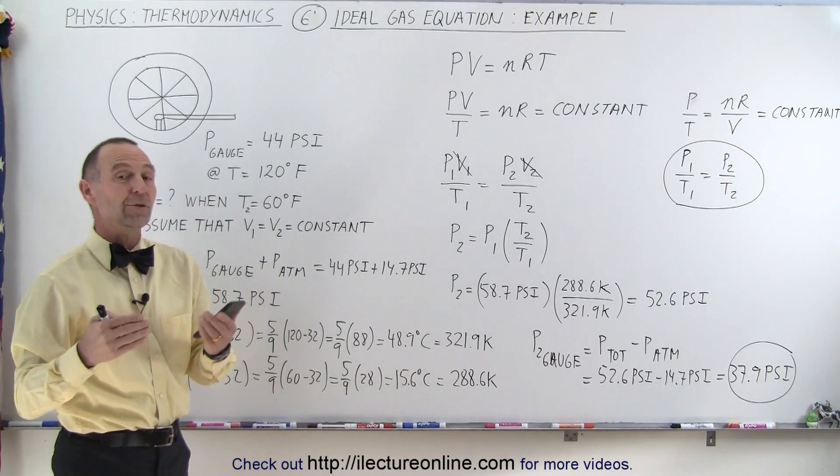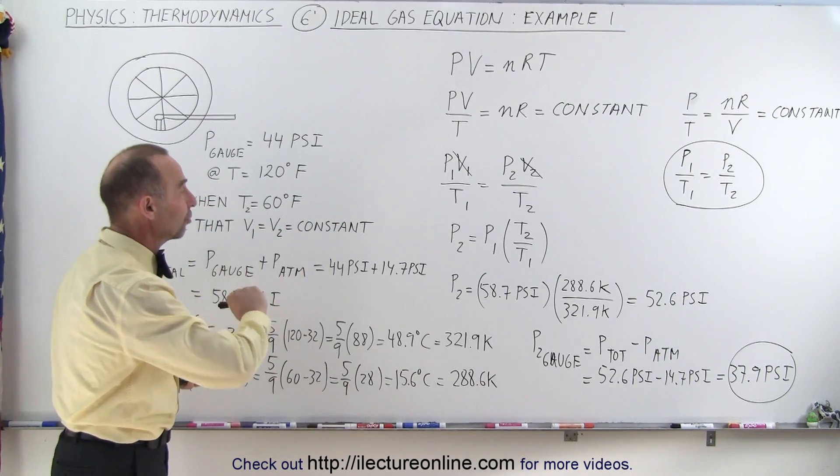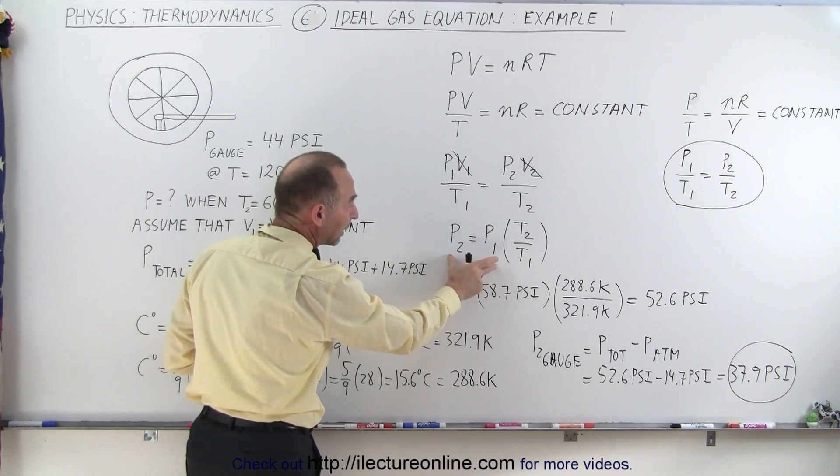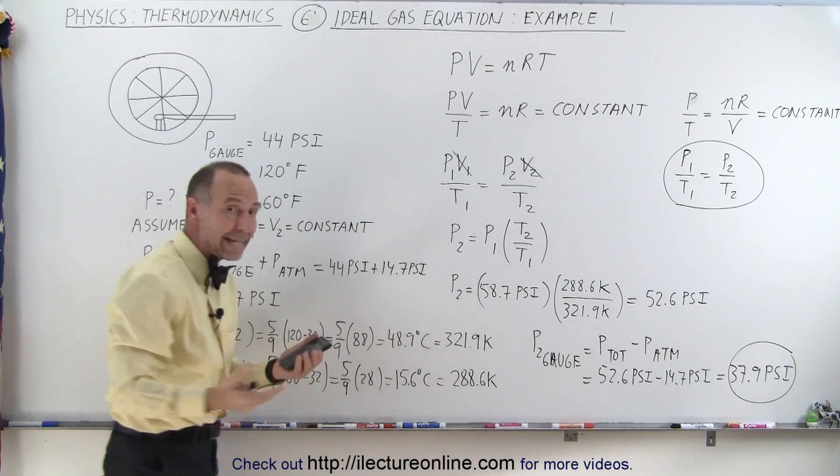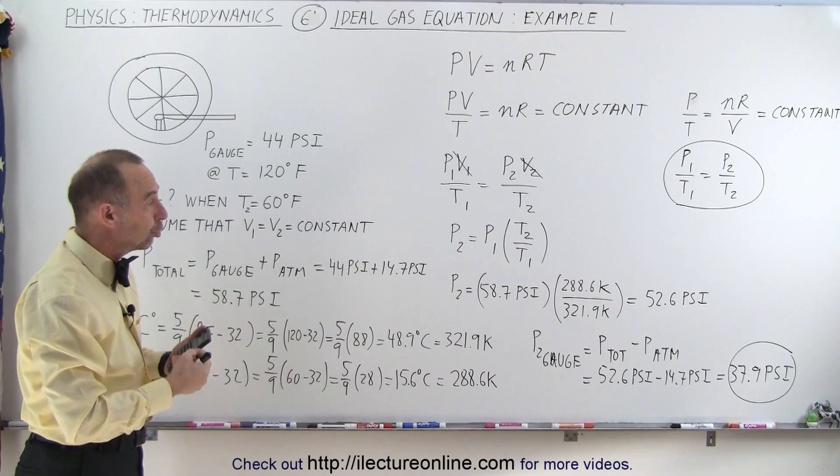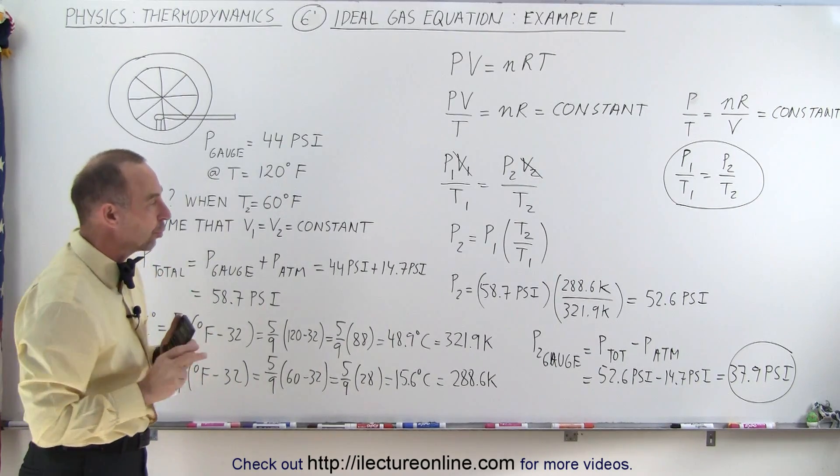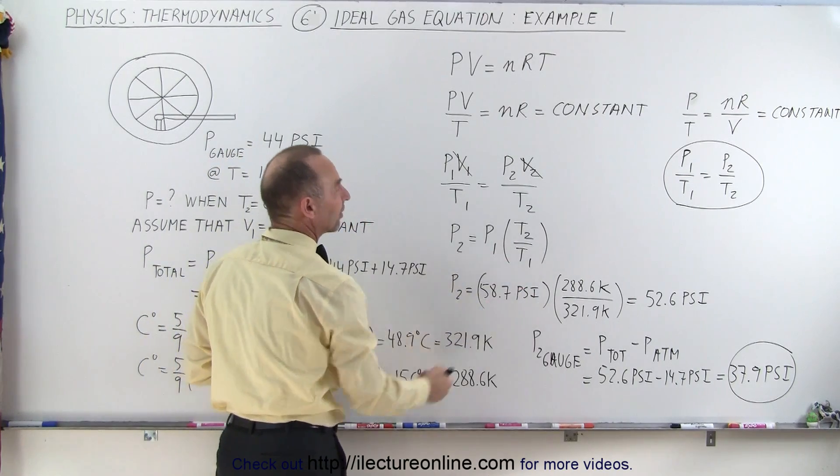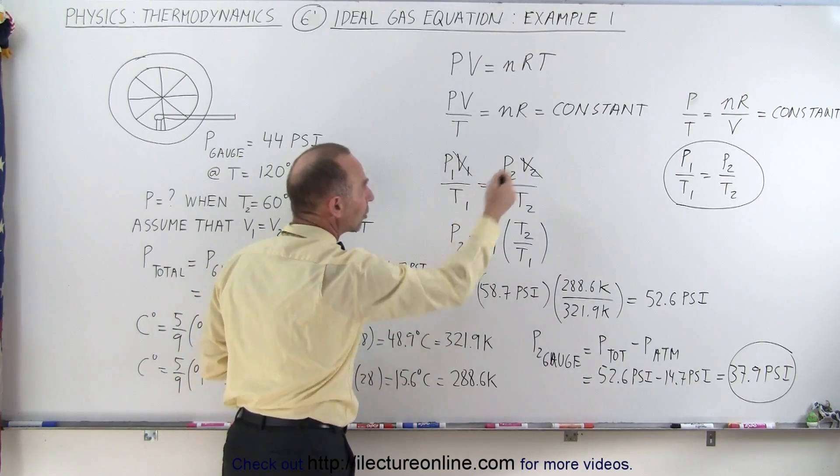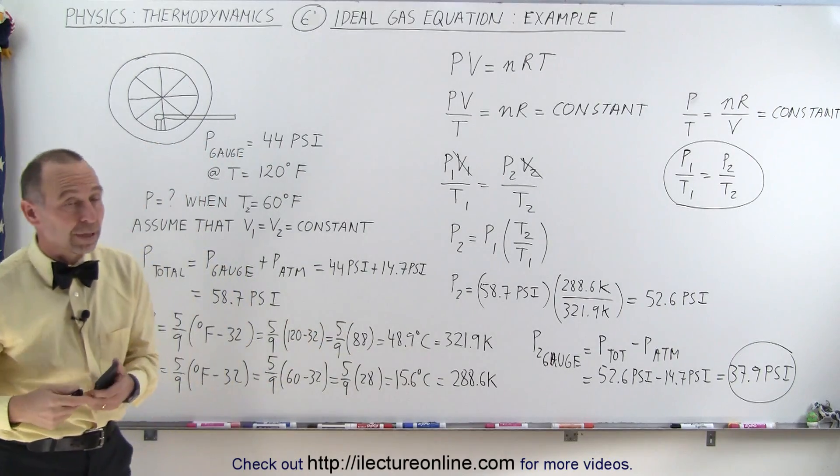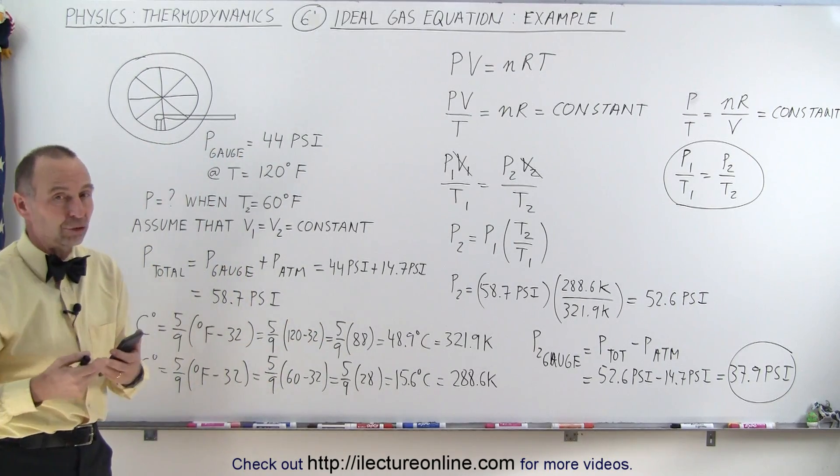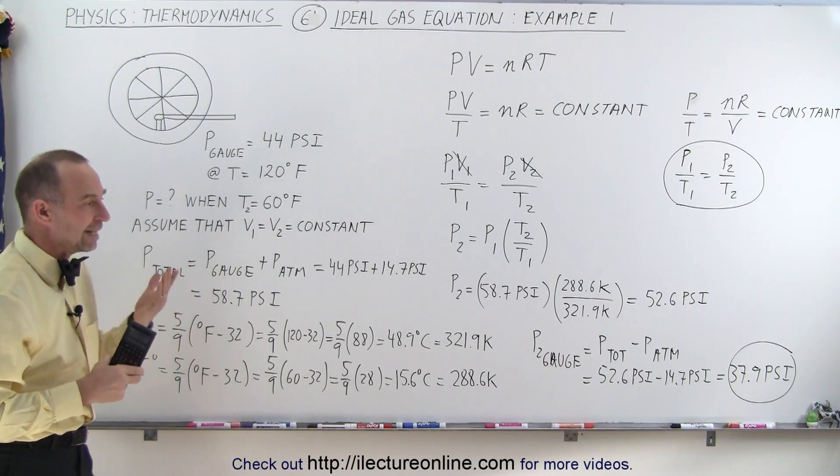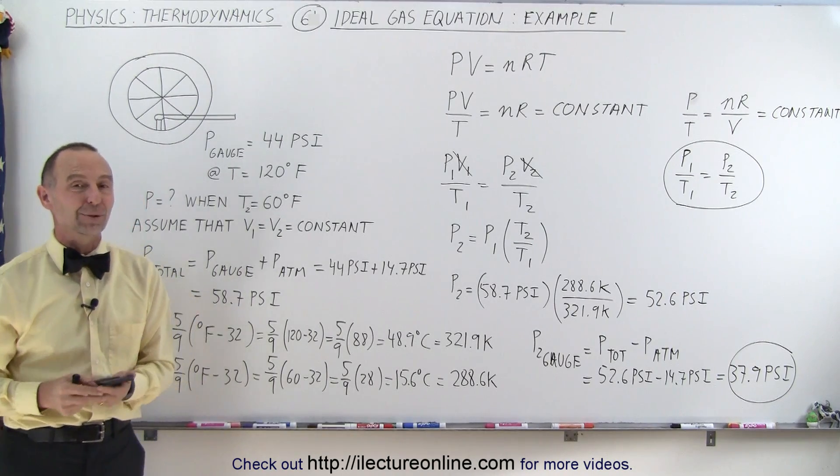All right, and that's how we convert. Remember, whenever we use the ideal gas equation, we must make sure that the temperature is in Kelvin. Typically, pressure should be in Pascals or should be in atmospheres, but as long as you have the proper ratio, you can leave it in PSI's. And if you have volumes, typically that would be converted to cubic meters. Again, if it's a ratio, you can get away with not making that conversion. But with temperatures, we didn't have the choice. And that's how we do that.